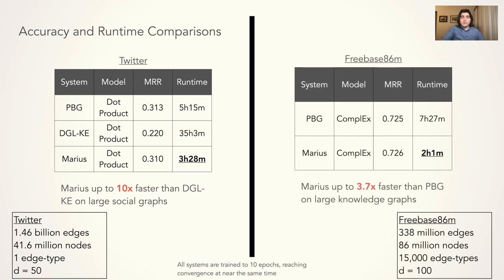Turning towards the Freebase86M knowledge graph, we are able to train 3.7x faster than PyTorch Big Graph while achieving the same accuracy. We do not include DGLKE here, as it could not run on this dataset due to CPU memory size constraints.